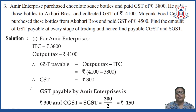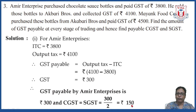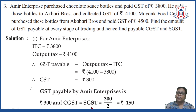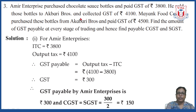From GST payable of rupees 300, we calculate CGST and SGST — each is exactly half, so 300 divided by 2 equals rupees 150. Therefore, GST payable by Amir Enterprises is rupees 300, and CGST and SGST are each rupees 150.